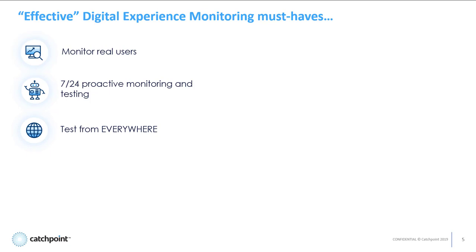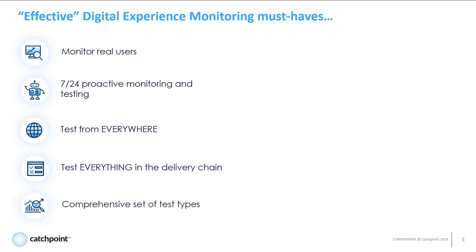Testing everywhere is great, but you must also test everything that is in your application delivery chain — don't leave any blind spots. You need a comprehensive set of test types, digging deeply into all the components that affect your end users. To do this, you'll need advanced API capabilities to get to that data and make it available for analysis.